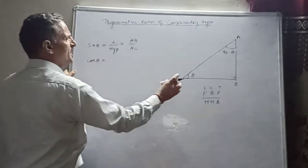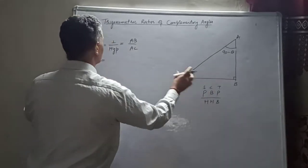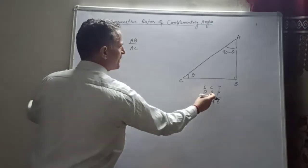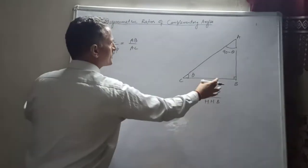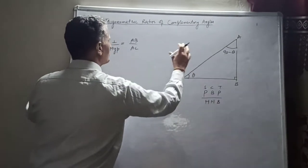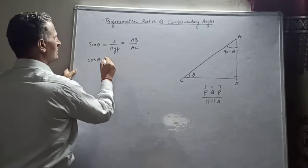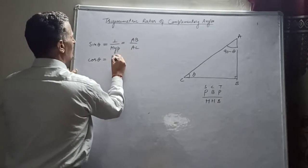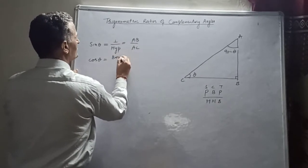If I write cos theta — cos theta is base upon hypotenuse. The base is BC and the hypotenuse is AC, so cos theta equals BC divided by AC.